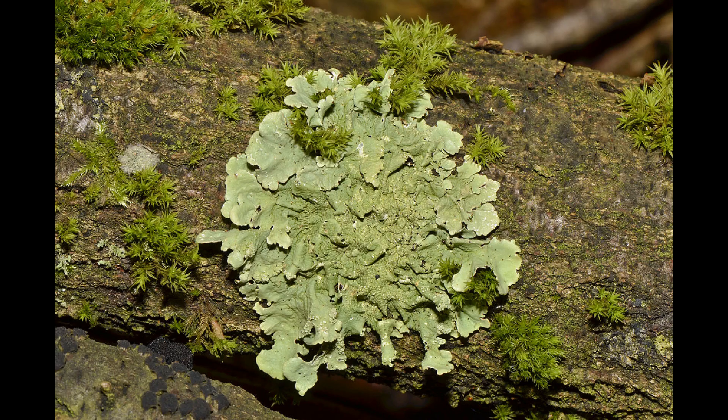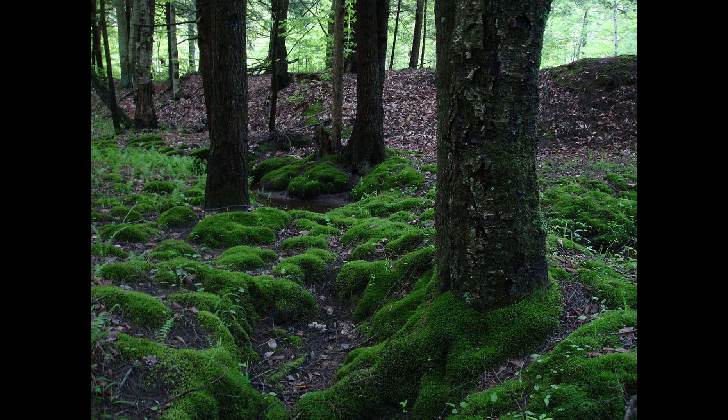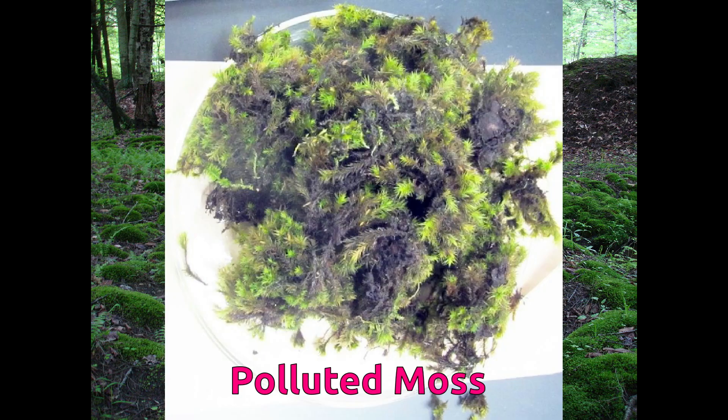Gases like sulfur dioxide released by factories cause the death of lichens and mosses. Lichens are used in food, scent, and dyes, while mosses prevent soil erosion and are used as moisture absorbers and fuel.